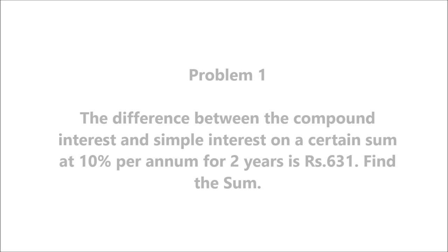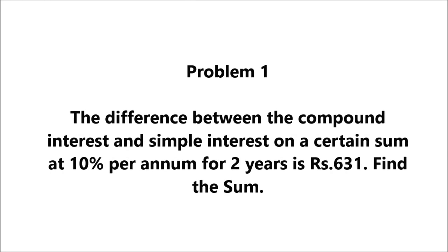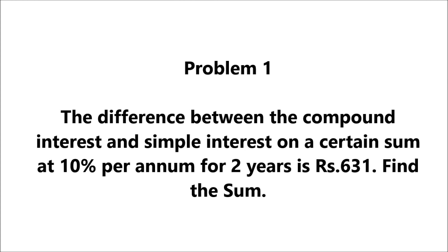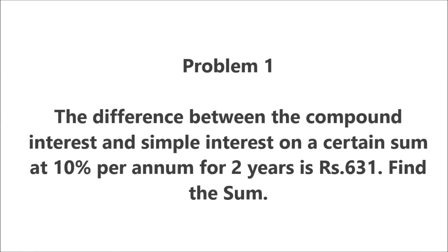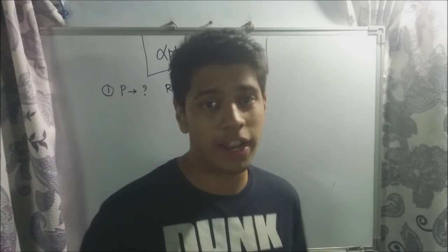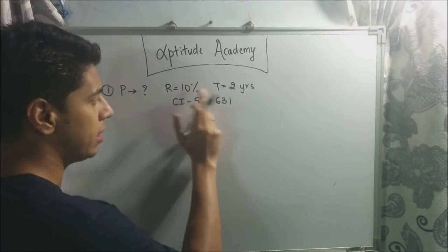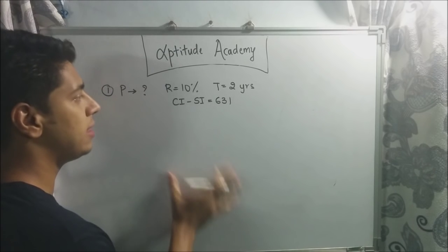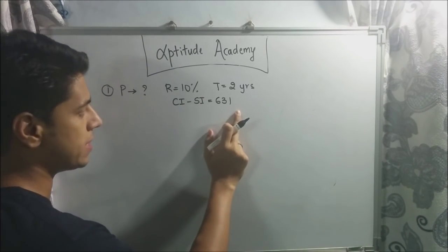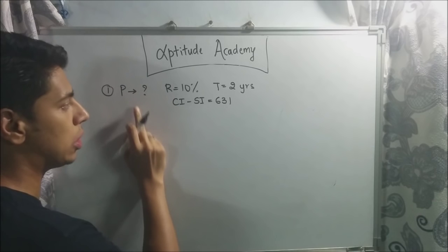Problem 1: The difference between the compound interest and simple interest on a certain sum at 10% per annum for 2 years is Rs. 631. Find the sum. The rate is 10%, T is 2 years, and the difference between CI and SI is Rs. 631. They've asked you to find the principal amount.